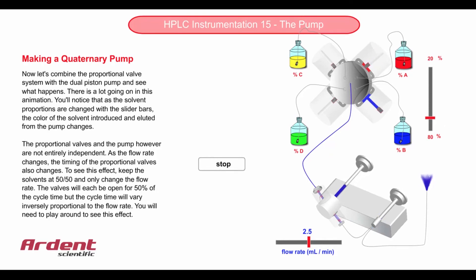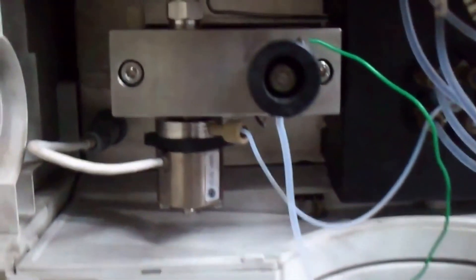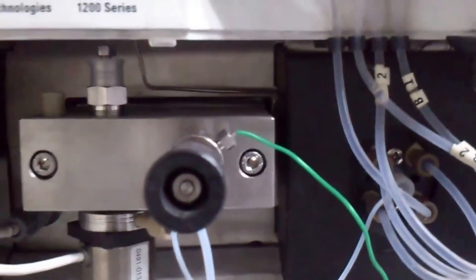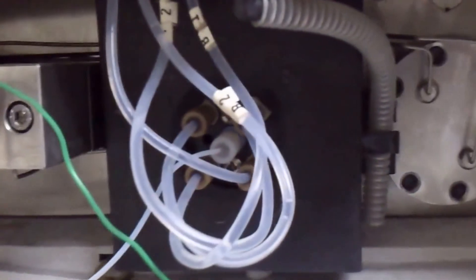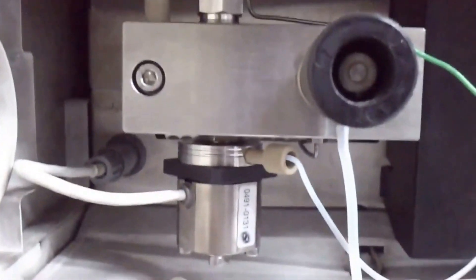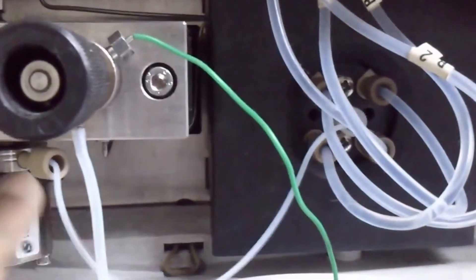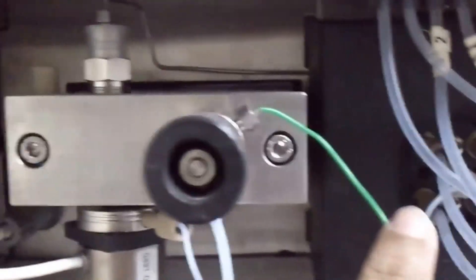Now let's see a quaternary pump in an actual HPLC instrument. We can see the pump unit on the left and the mixing chamber on the right. In the mixing chamber, we can see the four ports for the solvents and the port coming out from the chamber, delivering the mixture of solvents into the pump unit on the left.